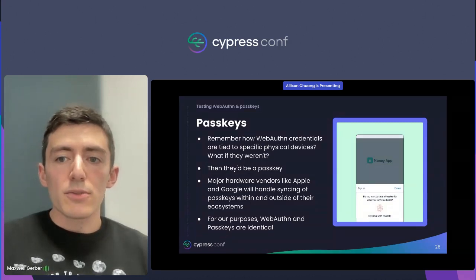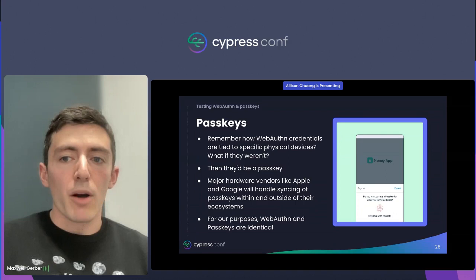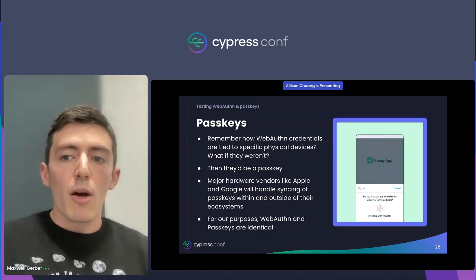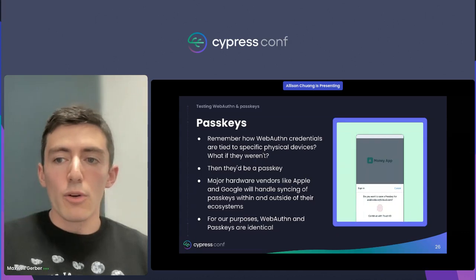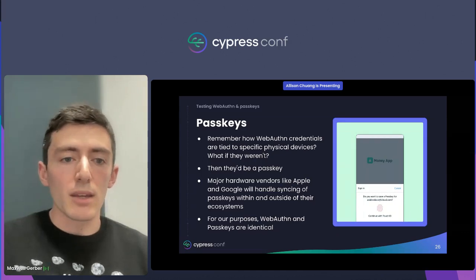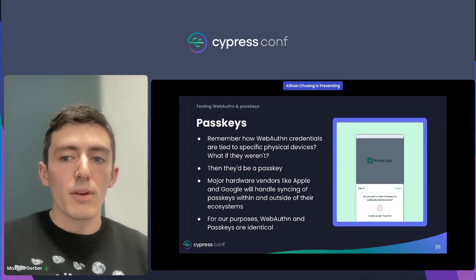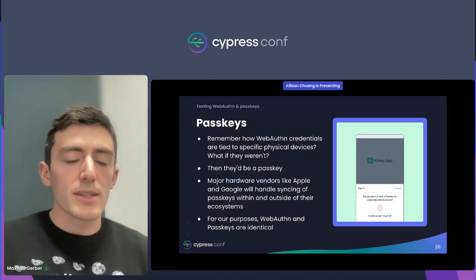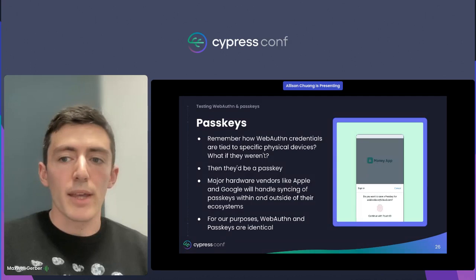Passkeys are a solution to one of the biggest problems with WebAuthn: what happens when you lose your authenticator? Imagine if your phone breaks or falls in the ocean, or if you lose your YubiKey and can't find it. You wouldn't be able to log in anymore. This means WebAuthn has never really found much success in consumer applications.